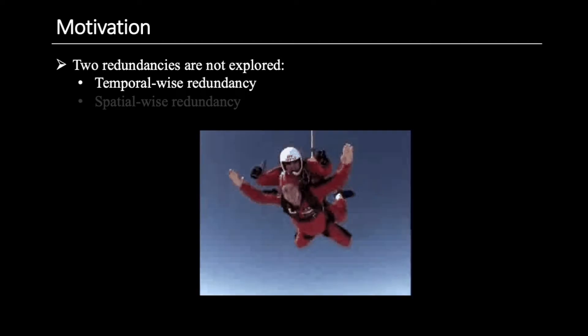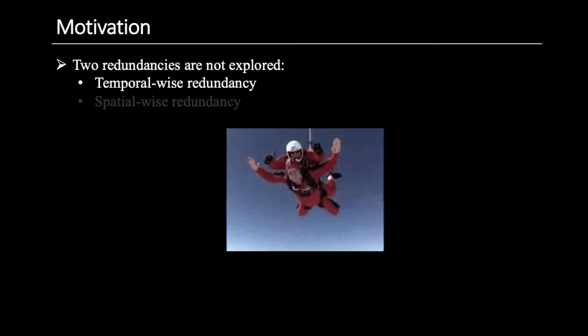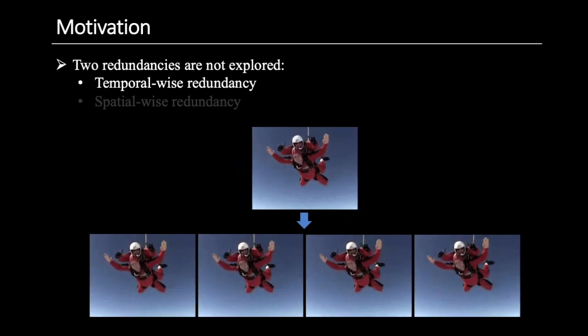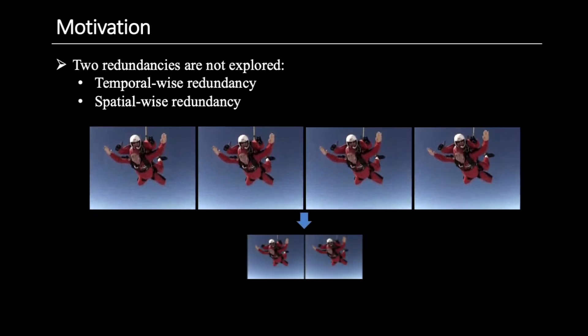However, the existing methods do not explore two redundancies: the temporal-wise redundancy and the spatial-wise redundancy. Here is a video clip of skydiving. We can see the four frames in this clip are almost the same, which indicates the temporal-wise redundancy exists in a video. Also, there is almost no information in the background, which indicates there are spatial-wise redundancies. If we downsample these four frames along the spatial and temporal dimensions, we can still easily recognize the people are skydiving in the downsampled image.